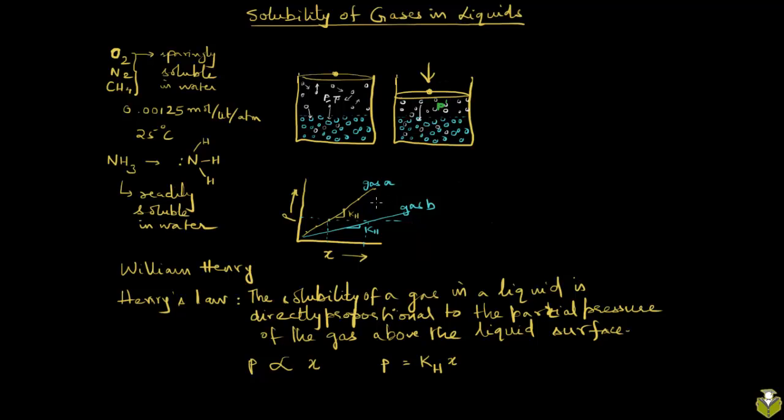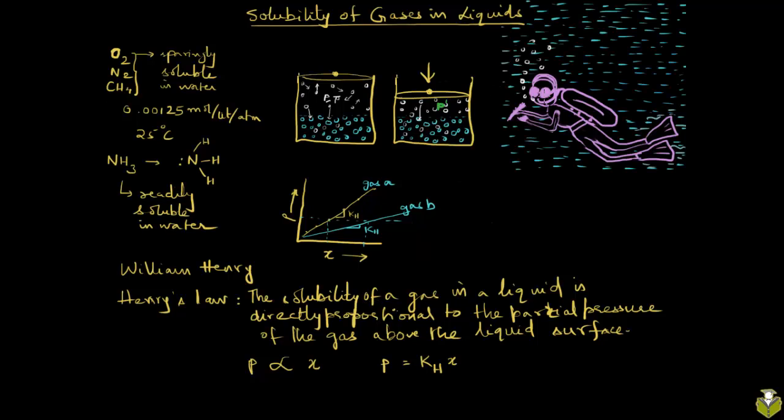Henry's law actually comes really handy in a variety of applications in our day-to-day lives. One such example that you can talk about is that of scuba divers. When they go deep into the ocean, at those depths the pressure that they are encountering is really higher. Added to the atmospheric pressure, you have this extra pressure due to the water column above them, and we know that it's equal to rho g h.